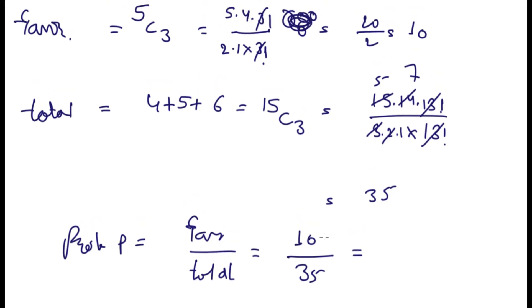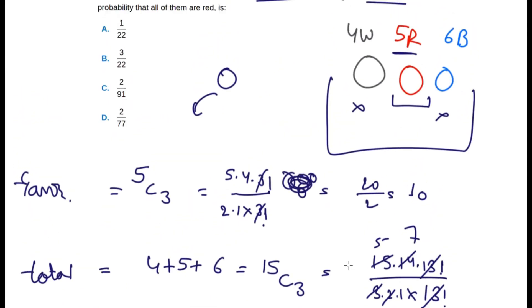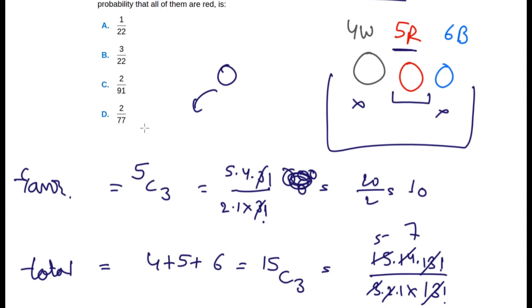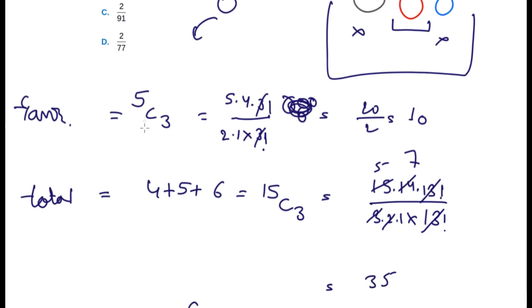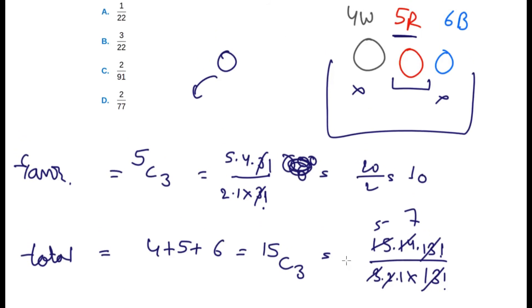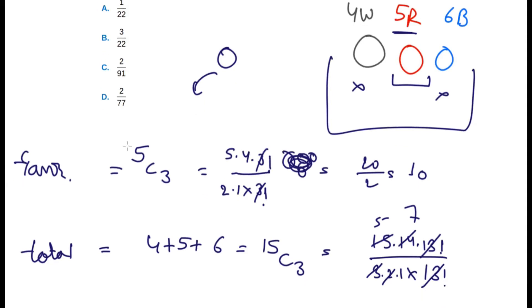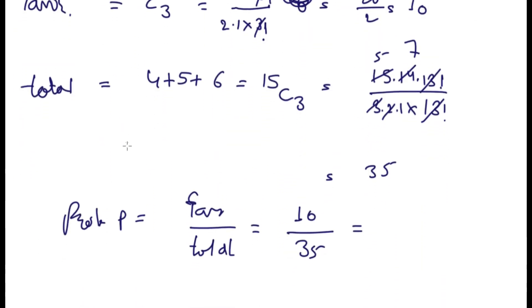The favorable cases are 10 and the total cases are 35. Let's look for the option. Or the simplified version, we can cut it by 5, but let's look at the options first. Looking at the basis, I think we did something wrong. Is there anything we can do to get 2/91 or 7/77? I think I made some mistake. Let's check it out.